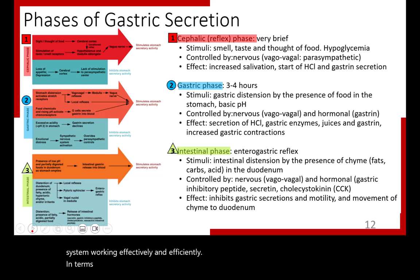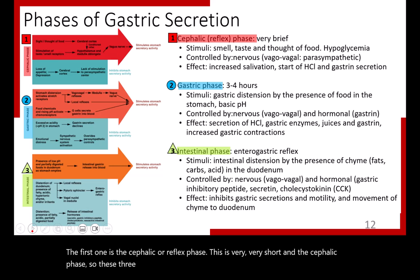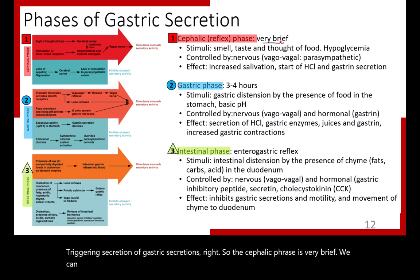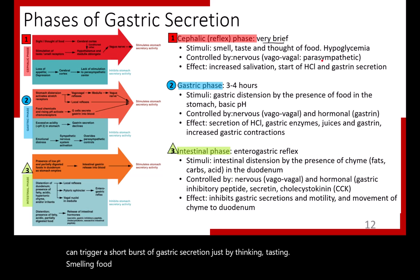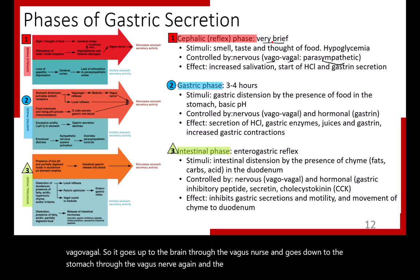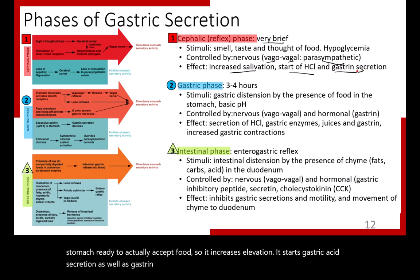There are three phases of gastric secretion. The first is the cephalic or reflex phase, which is very brief. We can trigger a short burst of gastric secretion just by thinking, tasting, or smelling food. This is controlled by the parasympathetic nervous system via the vagus nerve. The cephalic phase prepares the stomach for food by increasing salivation and starting gastric acid and gastrin secretion.